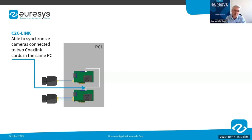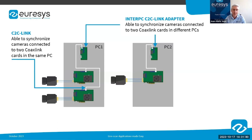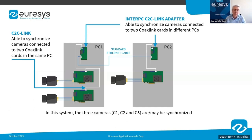If a third camera connected to a frame grabber in a different PC needs to be added to the system, each frame grabber is connected to an inter-PC C2C-Link adapter in its respective PC. Both adapters are then connected with a standard Ethernet cable. In this configuration, three cameras can be synchronized — the trigger is sent to the master frame grabber, which ensures all slaves receive exactly the same trigger at the same time.